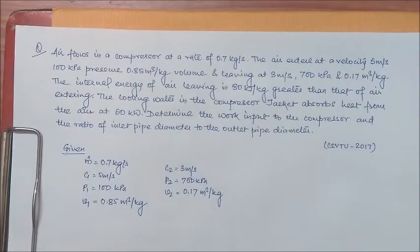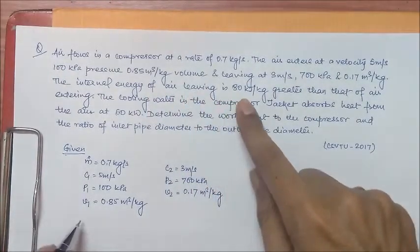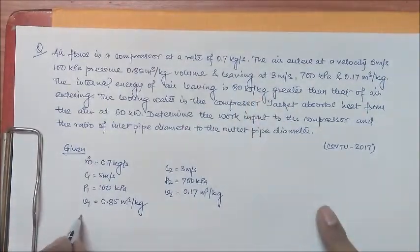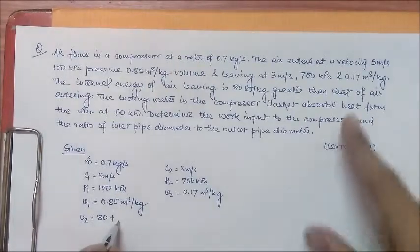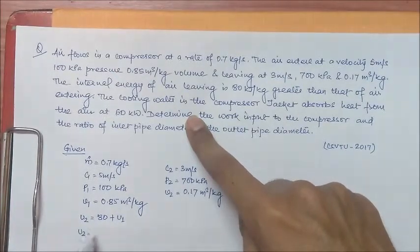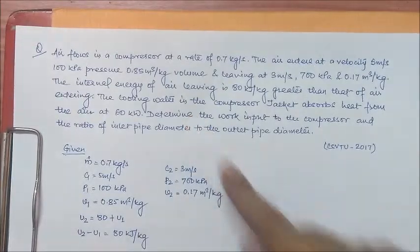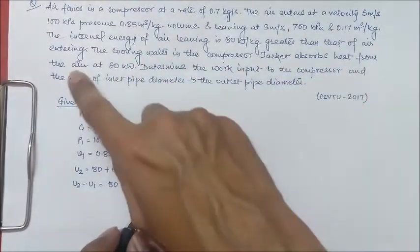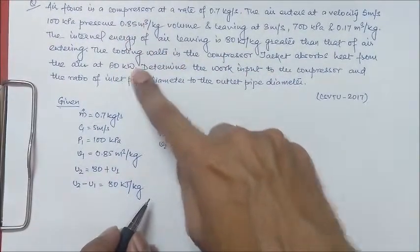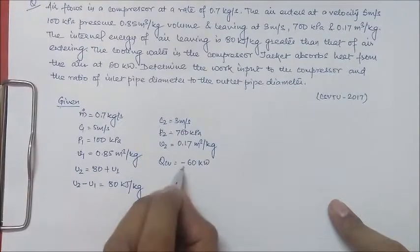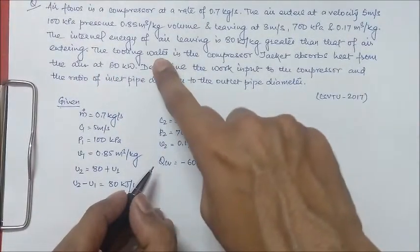The question says that the internal energy of air leaving is 80 kJ per kg greater than that of air entering — which means in specific terms, U2 minus U1 equals 80 kJ per kg. Also, the cooling water in the compressor jacket absorbs heat from the compressed air at 60 kW, so QCV is minus 60 kW, because heat is rejected from the air.